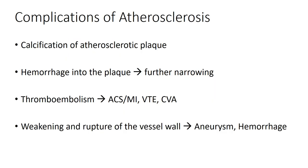In this part of the lecture we'll discuss some complications related to atherosclerosis. We talked about how calcification of atherosclerotic plaque can lead to significant lesions. Even though there may be a thickened cap around the vessel, plaque formation and atheromas cause the vessel to be weaker, which can lead to hemorrhage, rupture of the vessel wall, and formation of aneurysms.